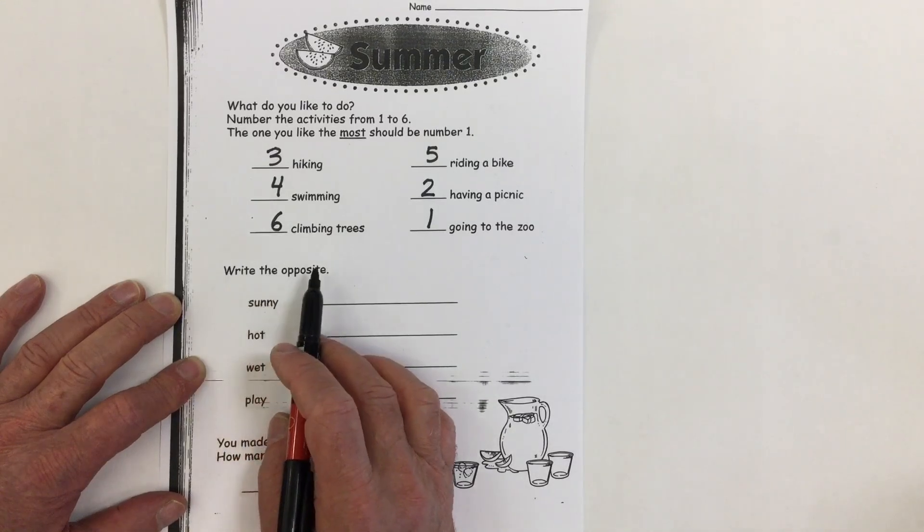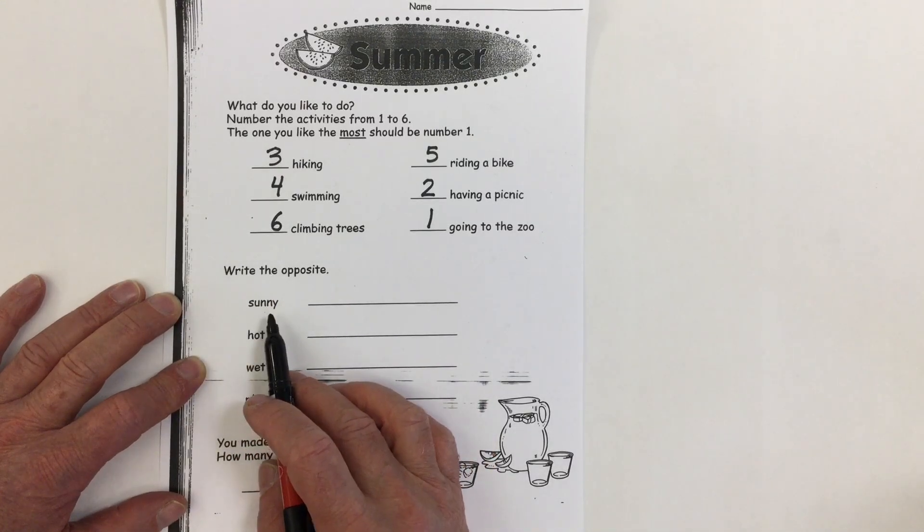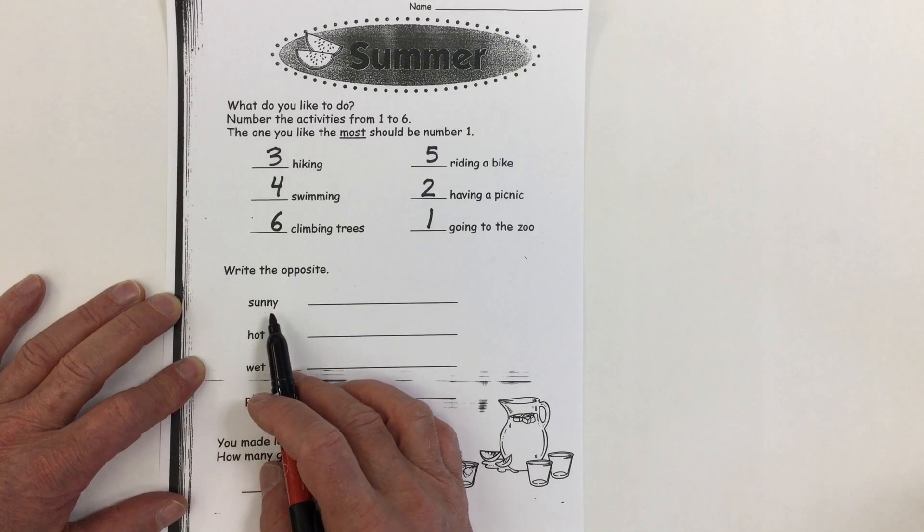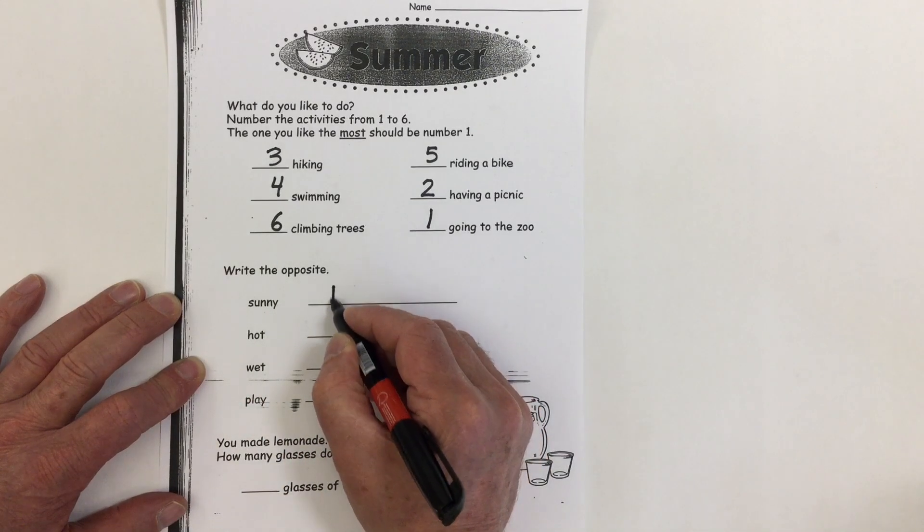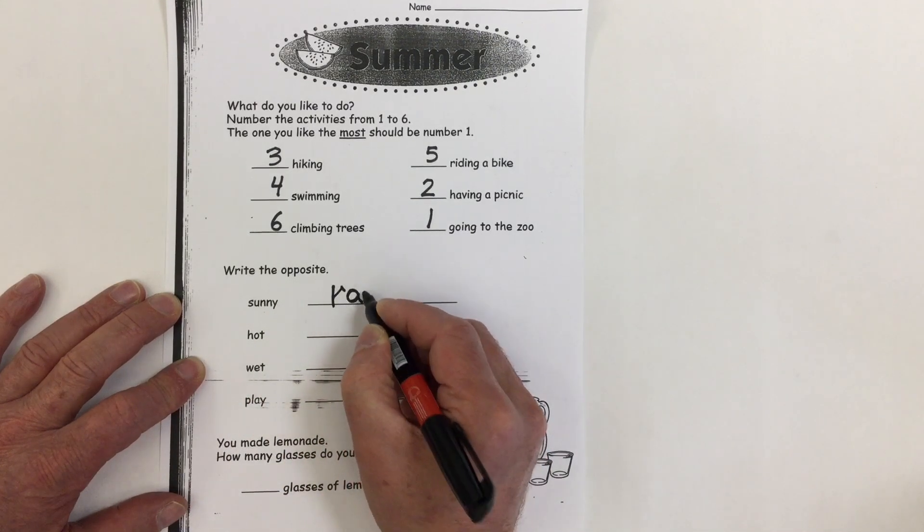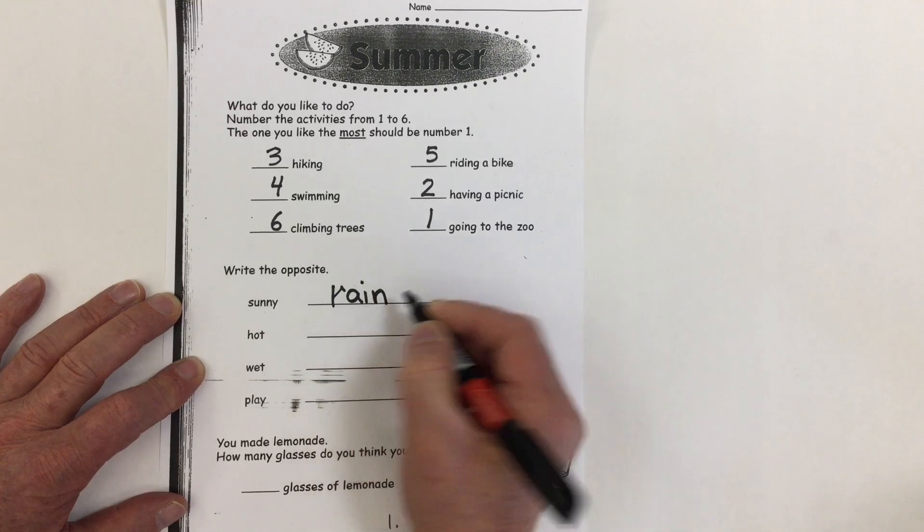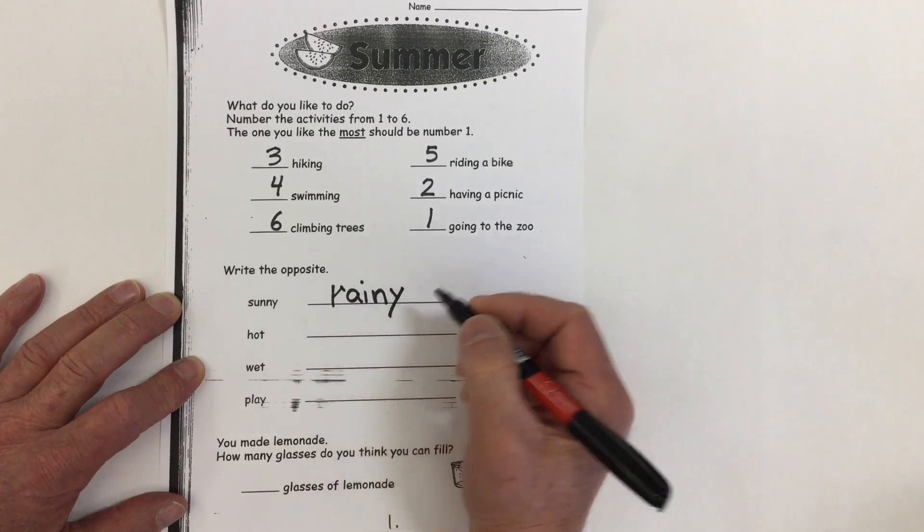Here it says, write the opposite. What's the opposite of the word sunny? Well, if you guessed rainy, you'd be right. R-A-I-N for rain and that Y at the end to make it rainy.